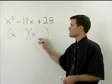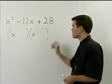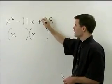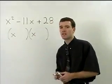To fill the second position in each binomial, you're going to use factors of 28 that add to negative 11.